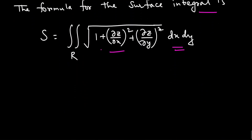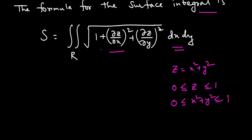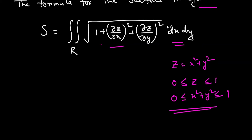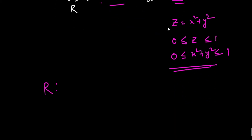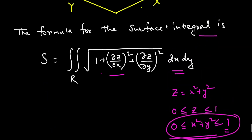Given the equation of the surface z = x² + y², we need to find the area of the surface between z = 0 and z = 1, that is 0 ≤ z ≤ 1, which means 0 ≤ x² + y² ≤ 1. The region R in the xy plane is therefore the circular disk x² + y² ≤ 1, with radius 1.